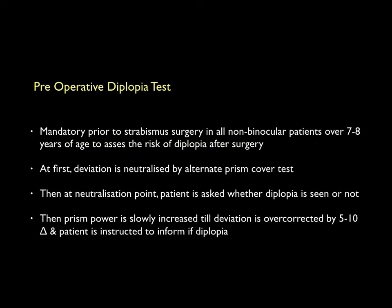Preoperatively, prisms can be used as a guide to assess if postoperatively a patient might develop diplopia or not. This is of use more so in adult patients who have an acquired type of strabismus. An alternate prism bar cover test is done and deviation is neutralized. The patient is asked if they can see single, then the prism is slightly increased by 5 to 10 prism diopters and the patient is instructed to report if diplopia returns. If during this assessment the patient is not able to fuse and see single, there are chances that postoperatively the patient may also complain of diplopia.